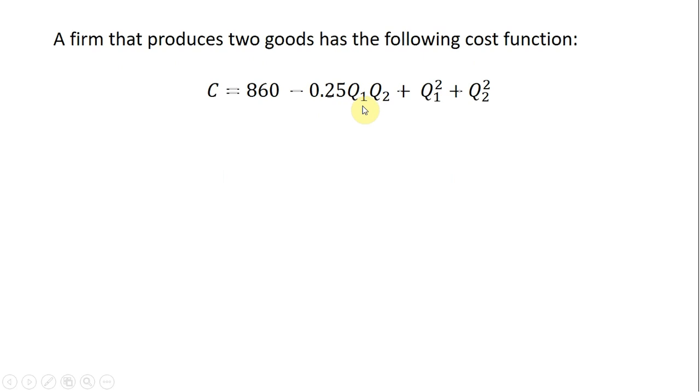Q subscript 1 is the output of one good, and Q subscript 2 represents the output of another good. So here's the cost function. We want to ask, do cost complementarities exist?